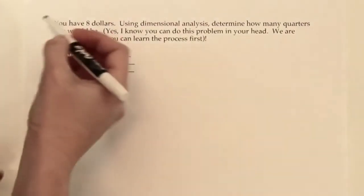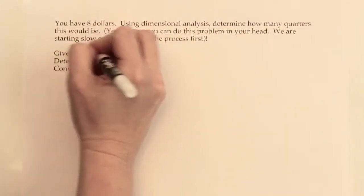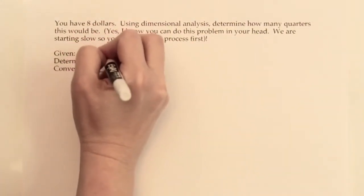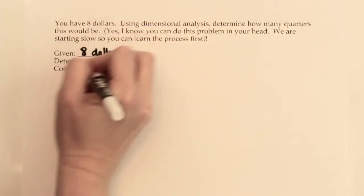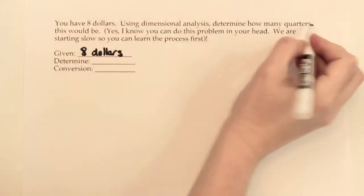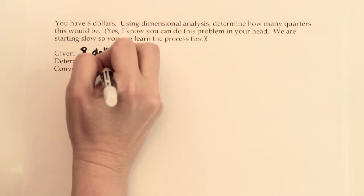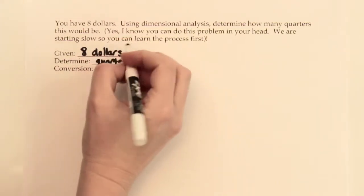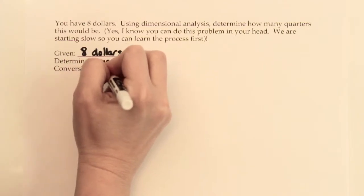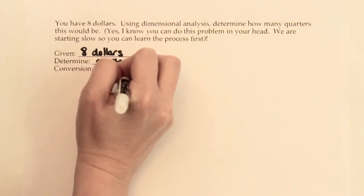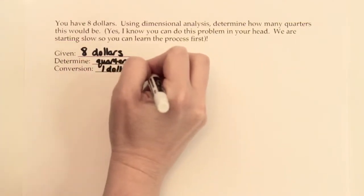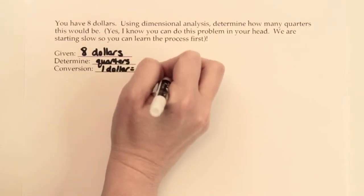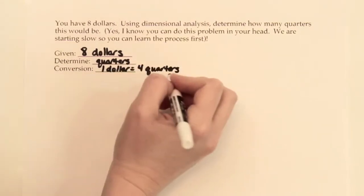So this first problem, you're told that you have $8, so that's our given. And we're trying to determine how many quarters that would be. And then we need a link between dollars and quarters. So we know that $1 has four quarters in it. That's our link or conversion factor between dollars and quarters.